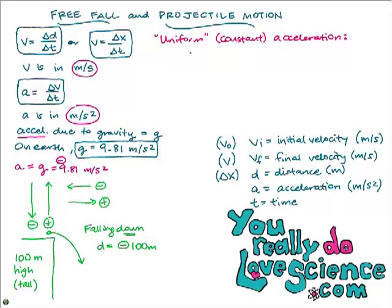Your teacher will give you two or three pieces of information — like 'the rock fell off the building and the building was 100 meters tall, how long did it take for the rock to land?' She'll give you one or two givens and you'll figure out one or two unknowns using the equations for uniform, meaning constant, acceleration.